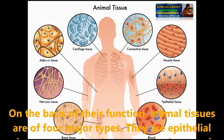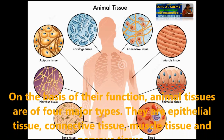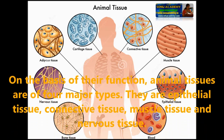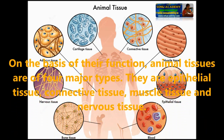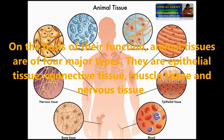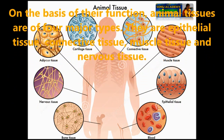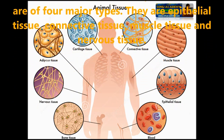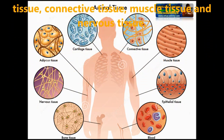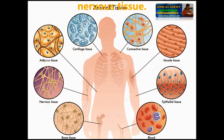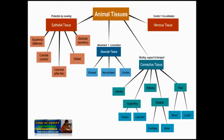On the basis of their function, animal tissues are of four major types: epithelial tissue, connective tissue, muscle tissue and nerve tissue. Let us examine the structure and functions of these four kinds of tissues in animals.